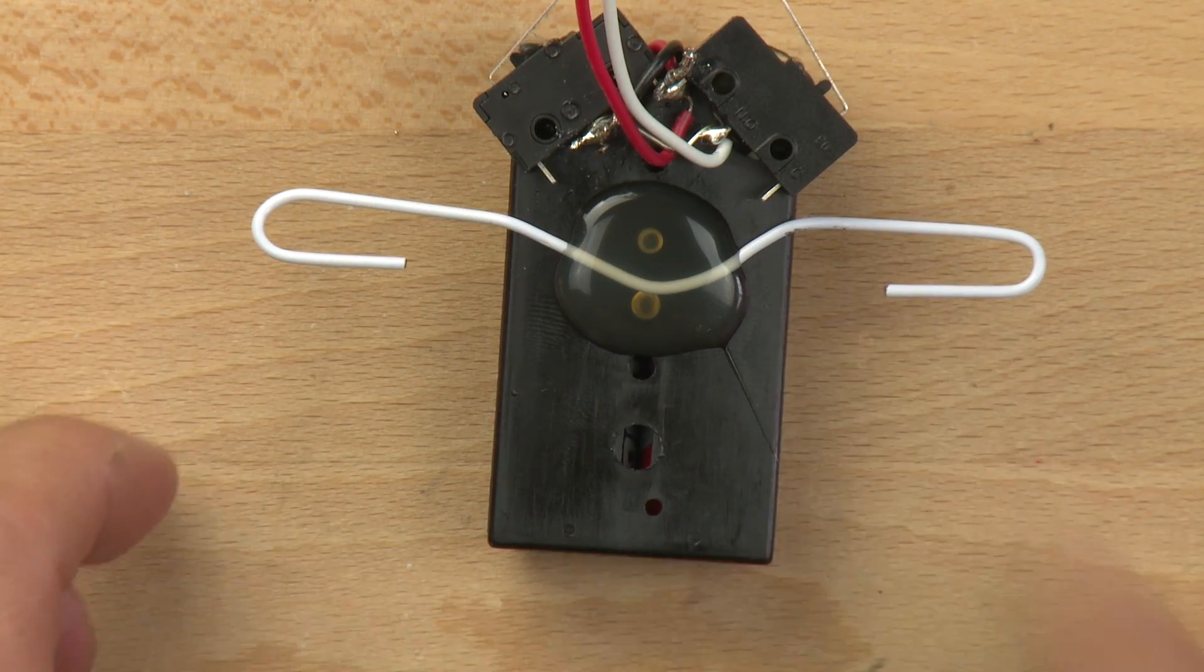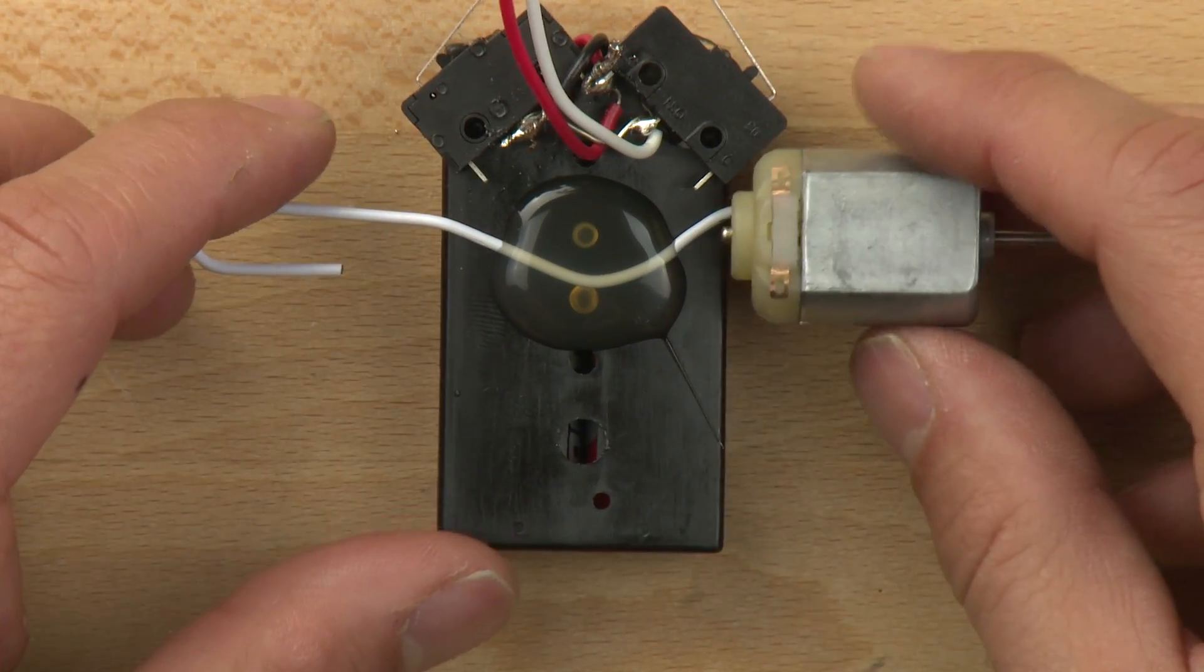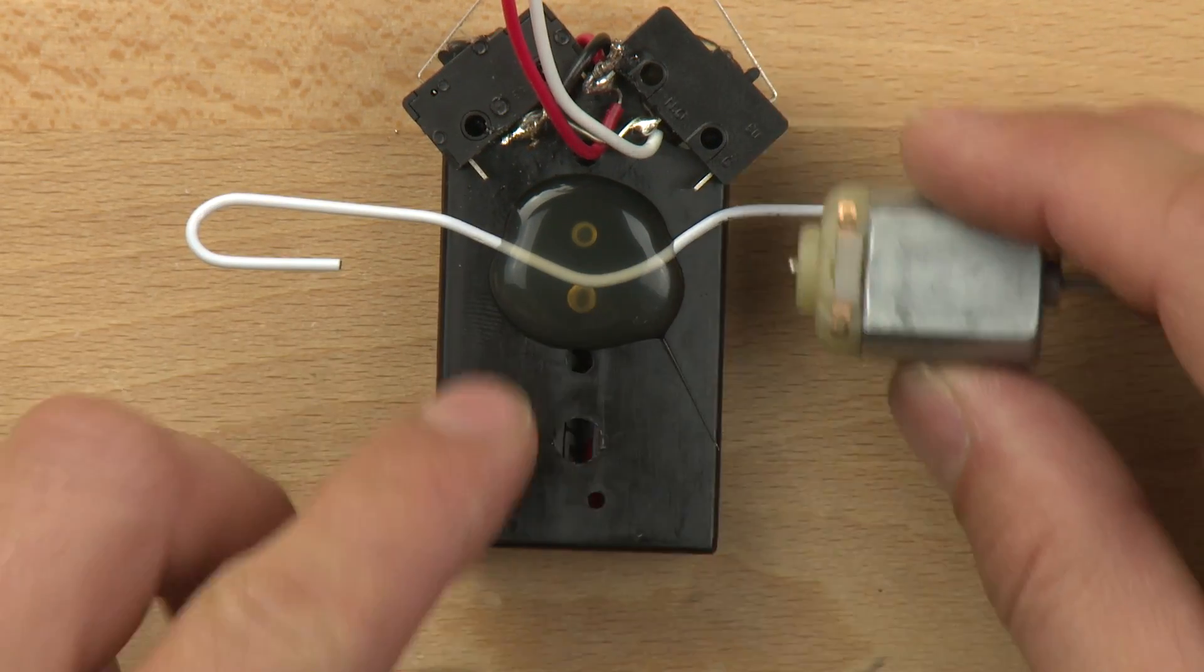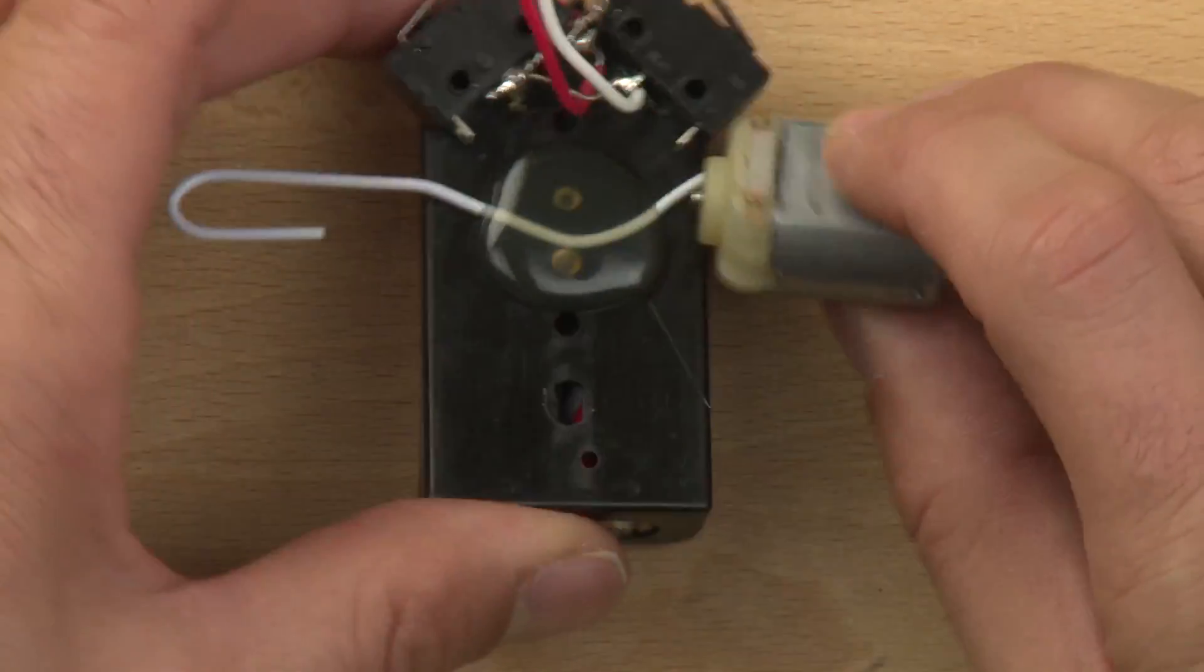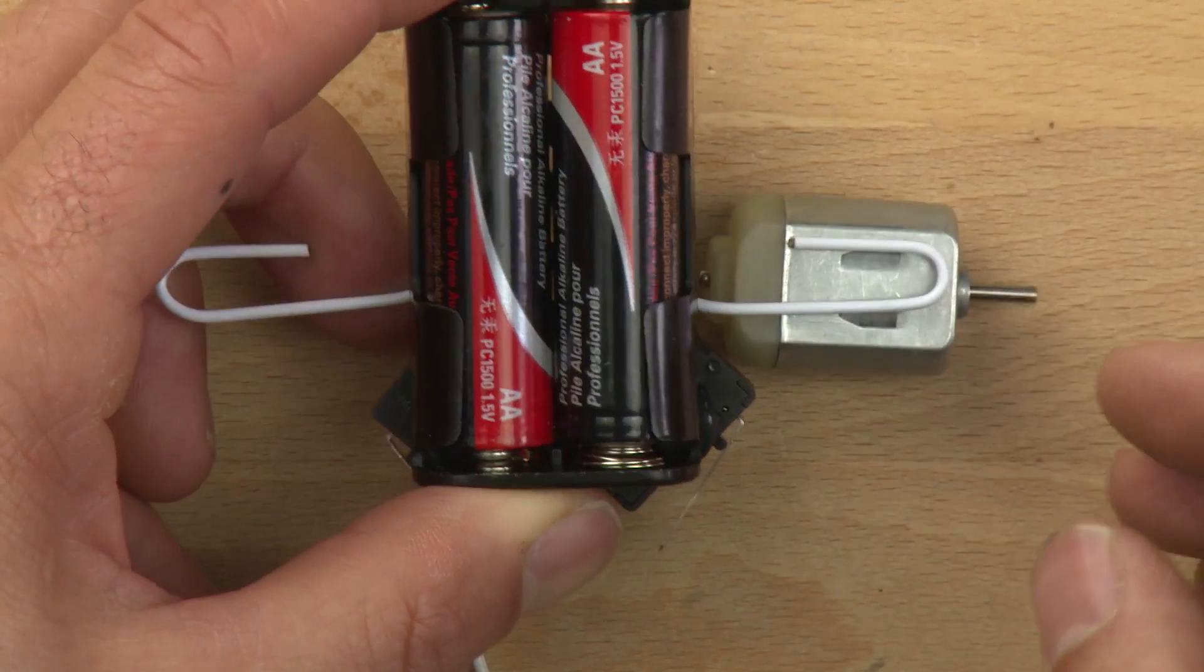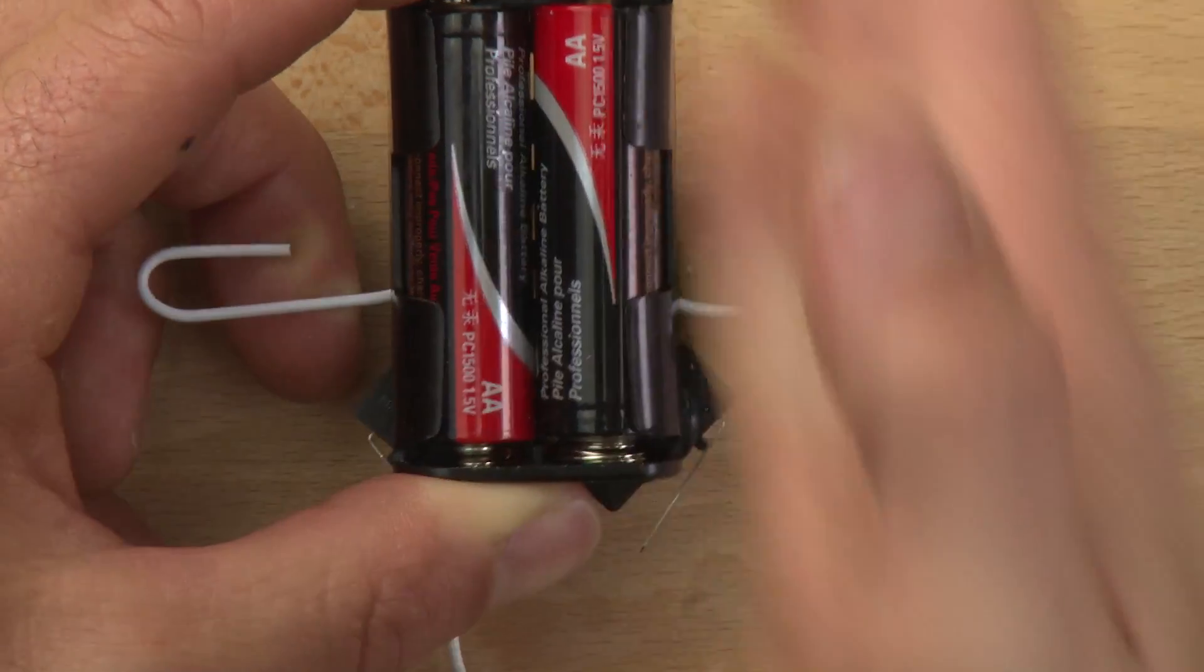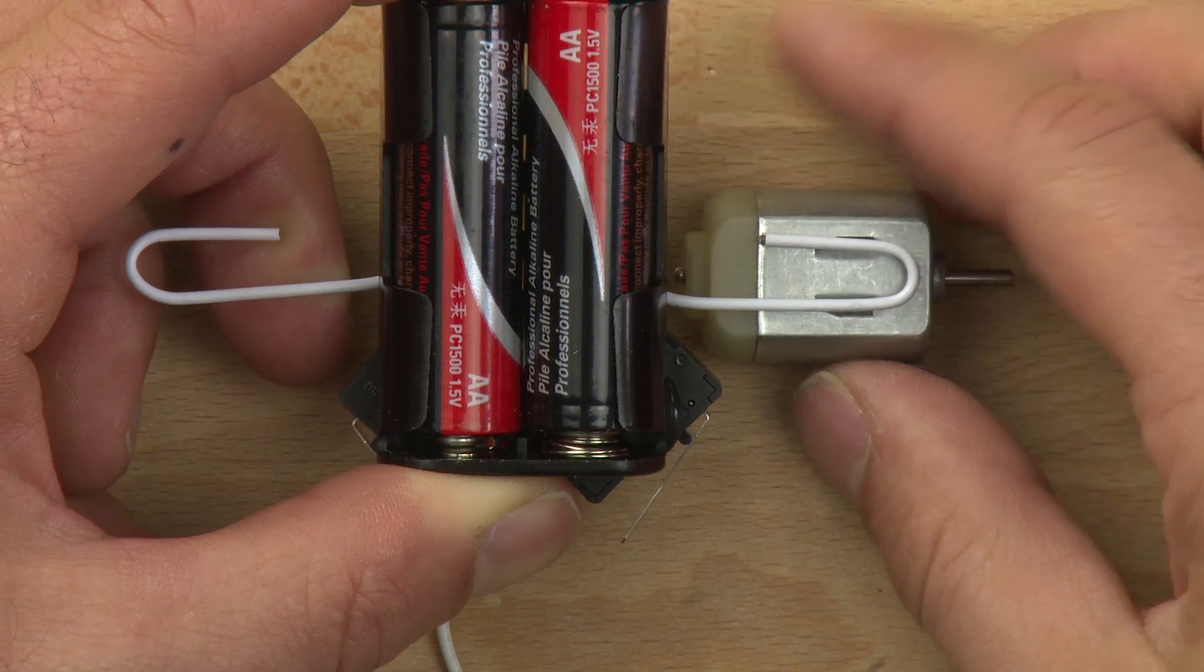Once the hot glue is cooled, you can go ahead and attach your motors. You want to make sure you attach the motors with the copper contacts facing up. The motors are going to sit on the paper clip like this, and it's important that you get the motor perpendicular to the battery holder.